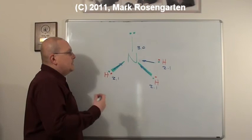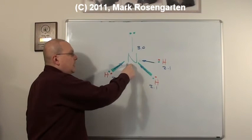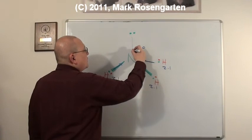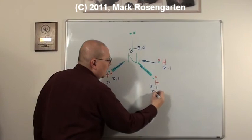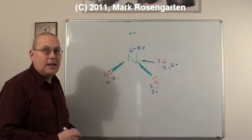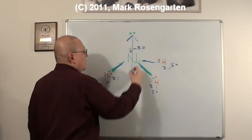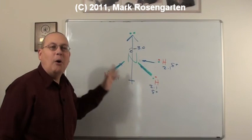What that means is the distribution of electrons is not equal throughout the molecule. Because the nitrogen side gets more use of the shared electrons, the nitrogen side is partially negative. And the hydrogen side is partially positive. This gives you a dipole moment up in that direction. This molecule is a polar molecule.